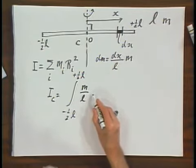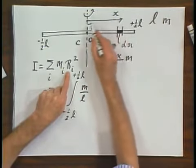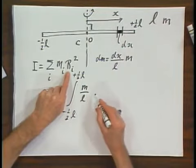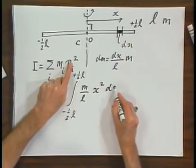And then I get dx, but I will wait with my dx because I have to multiply it with x squared. x is the distance from that mass element to the axis of rotation. So I get x squared, which is this term dx.